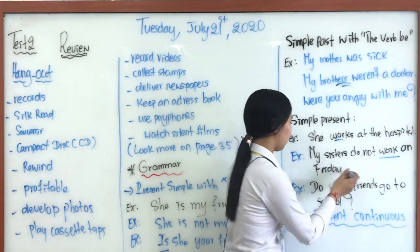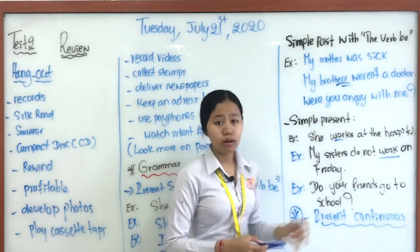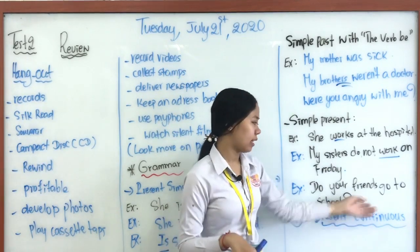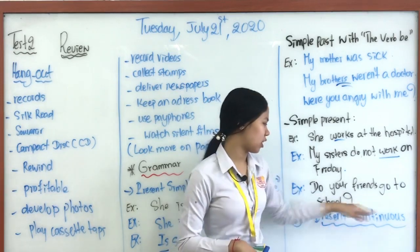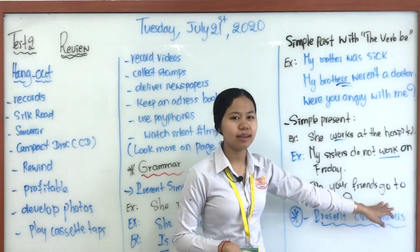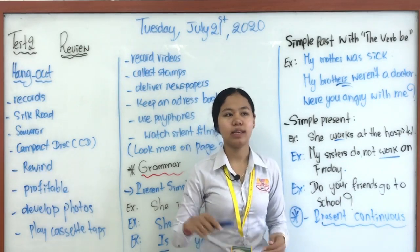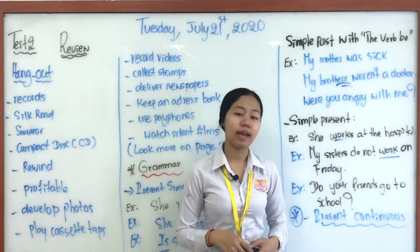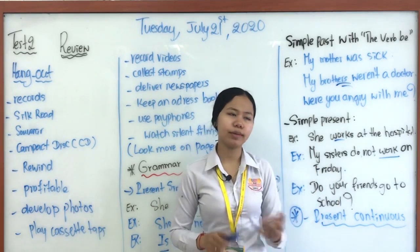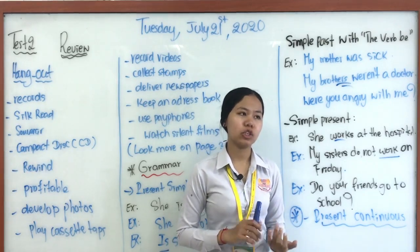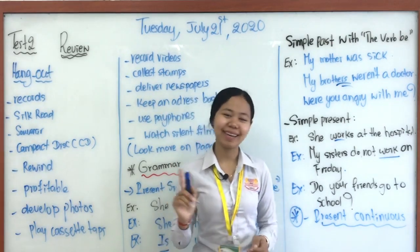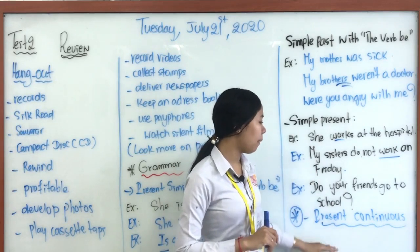For the question form, we have 'do' or 'does' plus subject plus base verb plus object. For example, 'Does your friend go?' — you don't change it to 'goes.' In the positive form, 'she goes' — we add 'es' because it ends with 'o.' But in negative and question forms, even with 'he/she/it,' the main verb stays as base form because the auxiliary verb 'does' is already in the sentence. Remember this — it will appear in your exam.